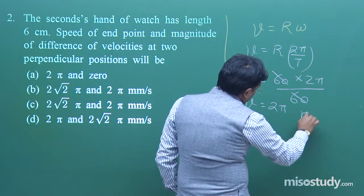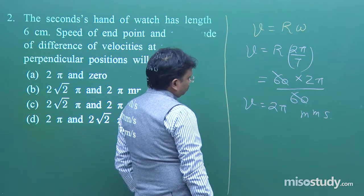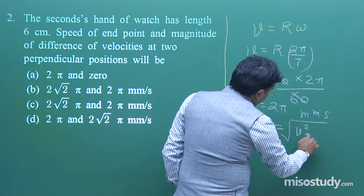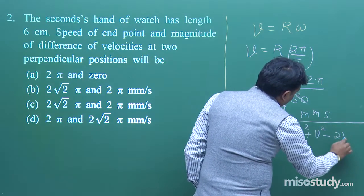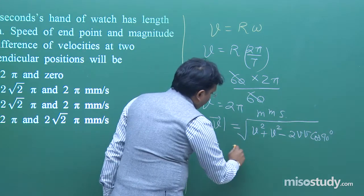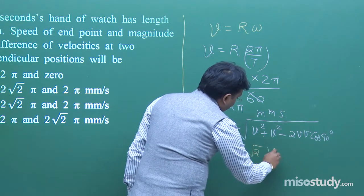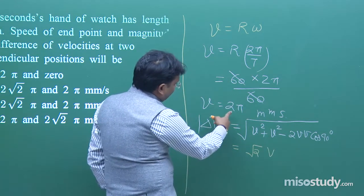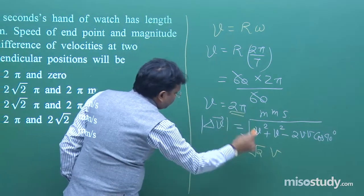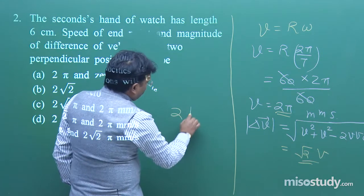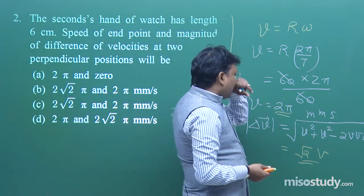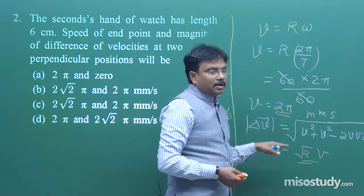From here, Δv = √(v² + v² − 2v·v·cos90°) = √(2v²) = √2 · v. The value of v is 2π, so the answer is 2√2π mm/s. You can verify: 6 × 10⁻² × 2π / 60 gives the same value.